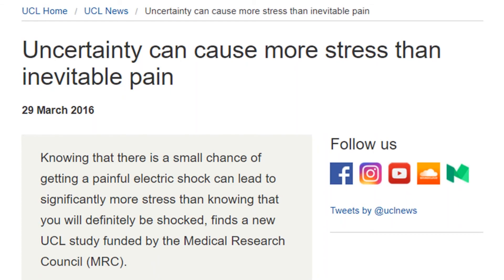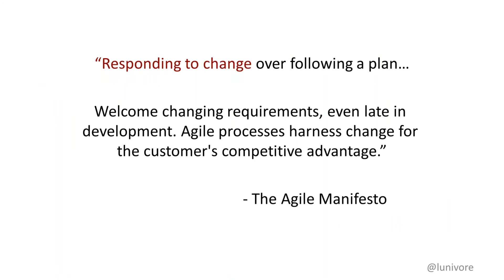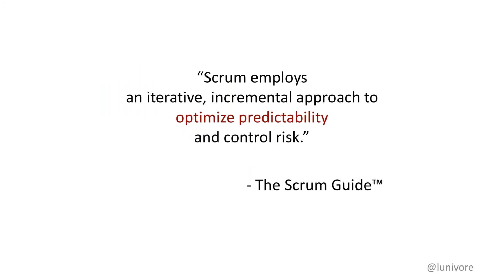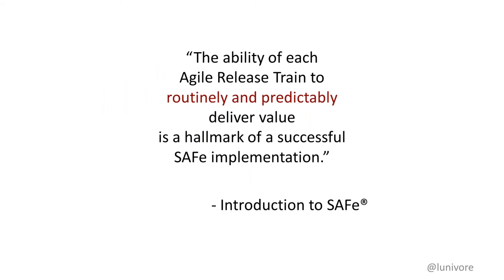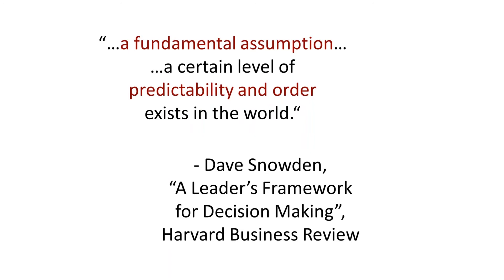This craving for certainty sells really well. The agile manifesto says we must respond to change over following a plan, and we welcome changing requirements. Yet the Scrum guide tries to optimize predictability and control risk, and the Scaled Agile Framework talks about routinely and predictably delivering value. Dave Snowden said there's a fundamental assumption that a certain level of predictability and order exists in the world — and it just ain't so.